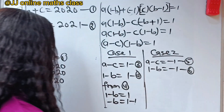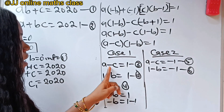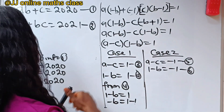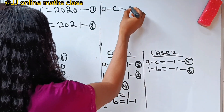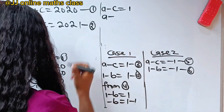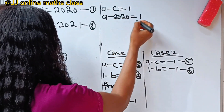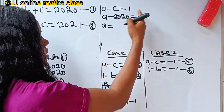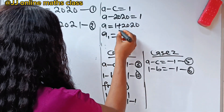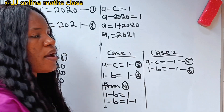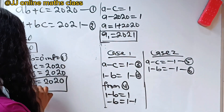From equation 3, A minus C equals 1. Substituting C equals 2020, we get A minus 2020 equals 1, so A equals 1 plus 2020, which means A1 equals 2021. So our A1 is 2021, B1 is 0, and C1 is 2020.